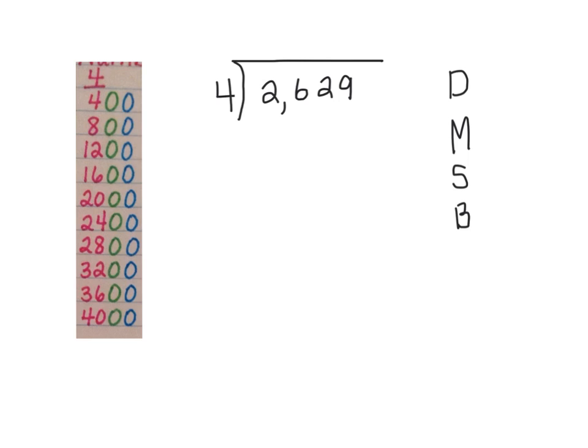One last example to look at here. I have 2,629 divided by 4. I'm going to start with dividing. 2 divided by 4. If I have 2 apples, can I put it into 4 groups? No, that would be 0. Multiply. 0 times 4 is 0. Subtract. And bring down the 6, 26.